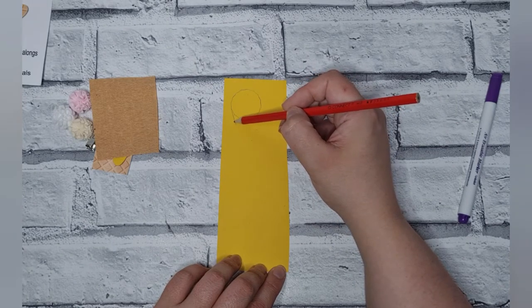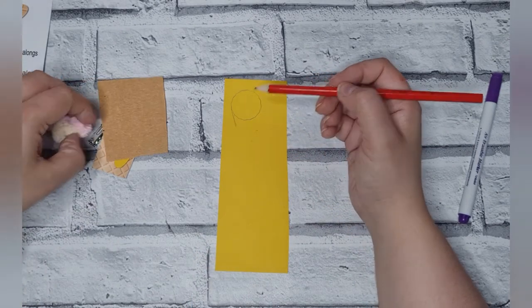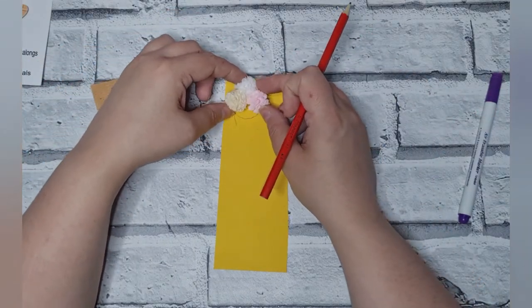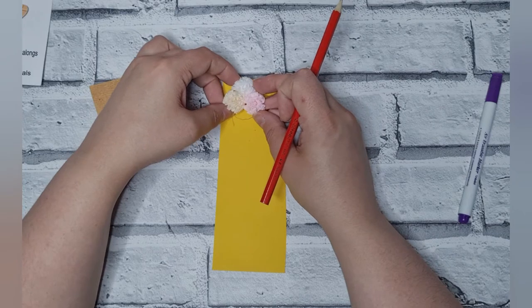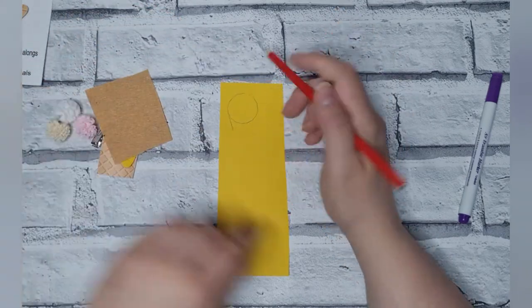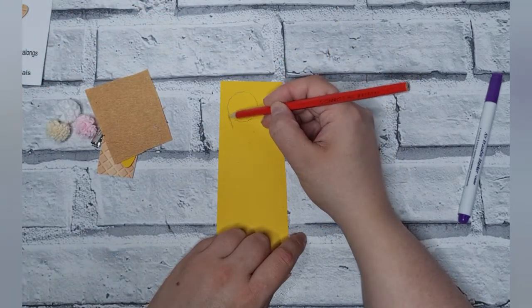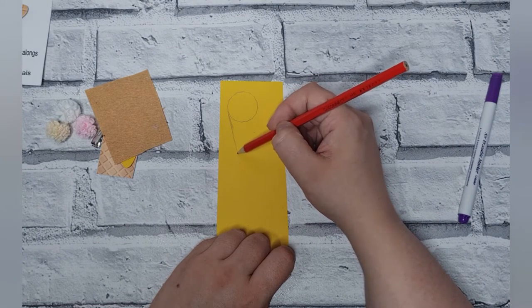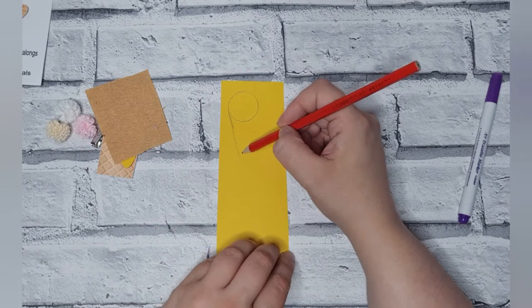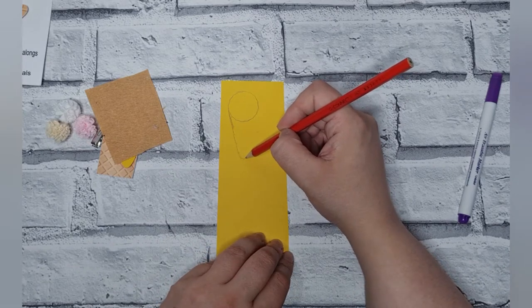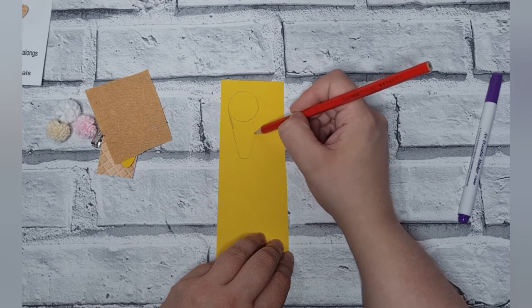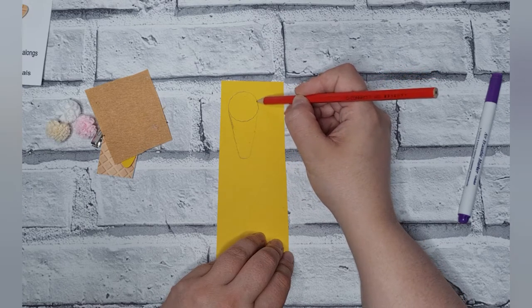I also placed the pom-poms on top and made sure that they weren't going to be bigger than the circle, because obviously we don't want to see the felt behind it. And like I said, you could make a pointed cone, you could make a curved one, you can make it longer, you could make it shorter, whatever makes sense to yourself.